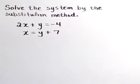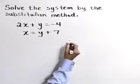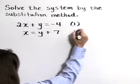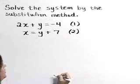Solve the system by the substitution method. We have the equations 3x plus y is equal to negative 4 and x is equal to y plus 7. I'm going to identify these equations as equation 1 and equation 2.